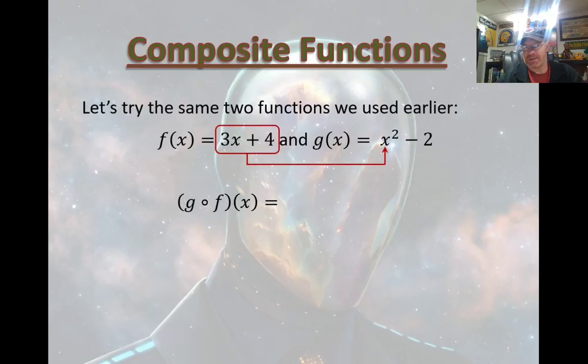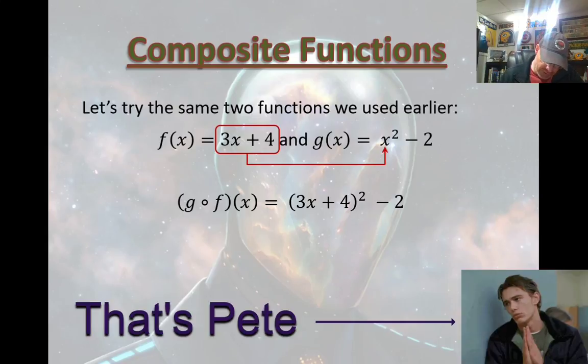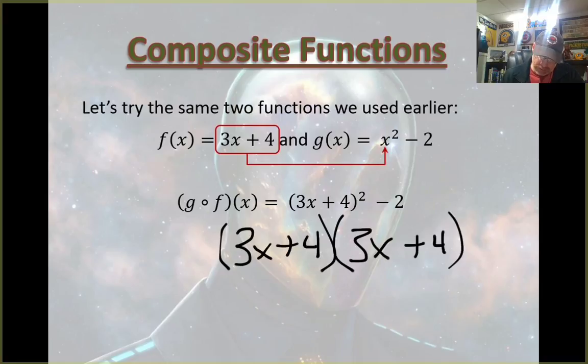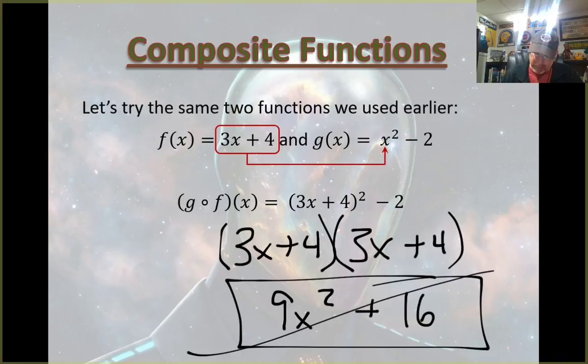And for Pete's sake, please remember that (3x + 4)² is (3x + 4) times (3x + 4). It's not 9x² + 16. The single most common mistake in all of mathematics history—get it right.